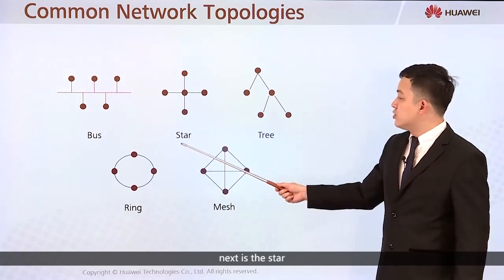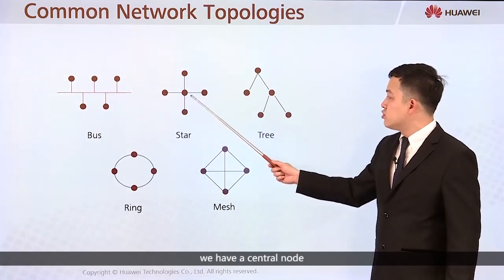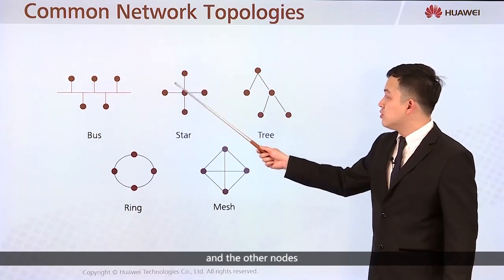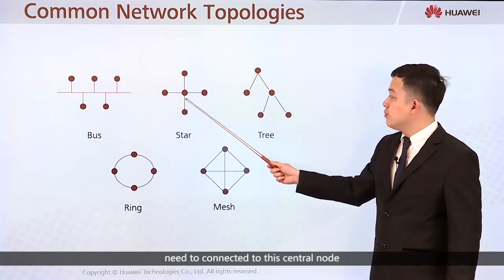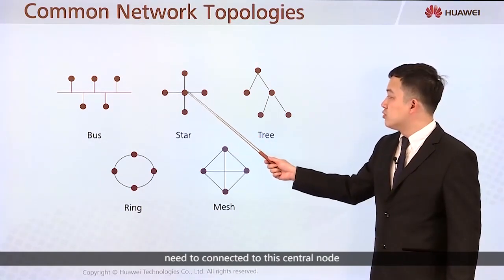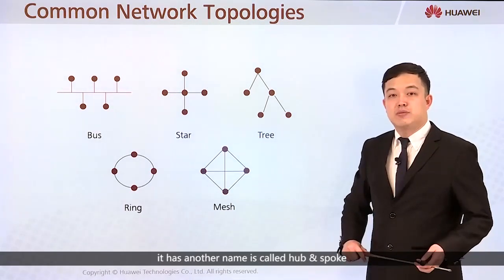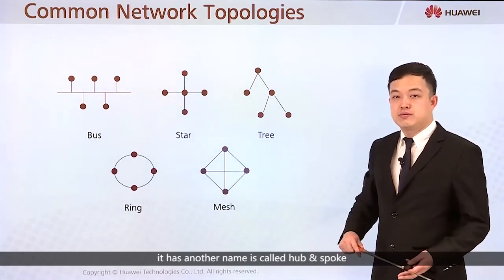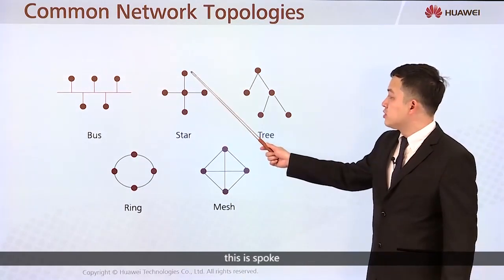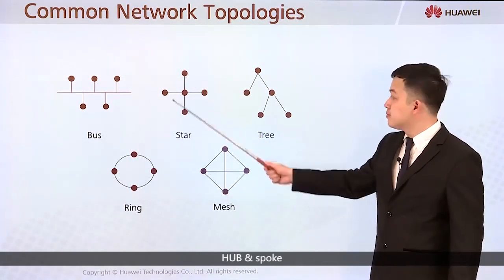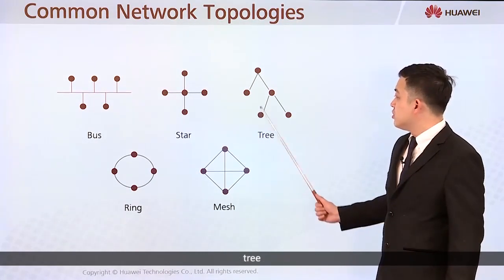Next is the star topology. In star, we have a central node and all other nodes need to connect to this central node. It has another name: hub and spoke — this is the hub and these are the spokes. Another topology is the tree.